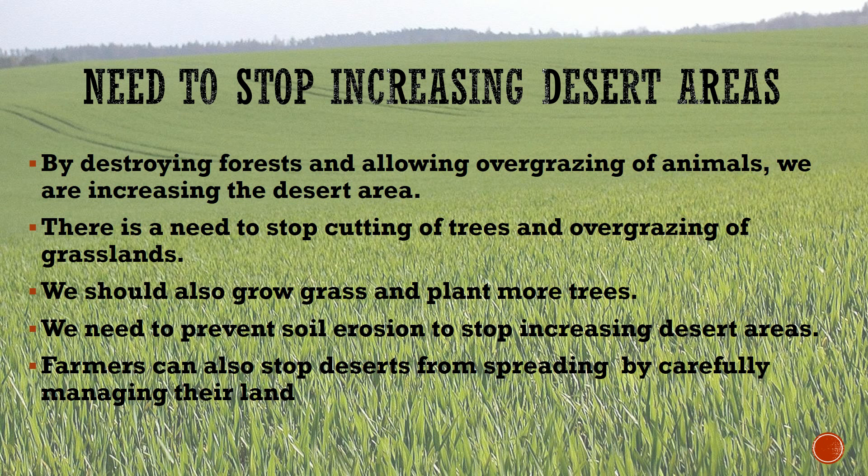We need to stop increasing desert areas. By destroying forests and allowing overgrazing of animals, we are increasing the desert area. There is a need to stop cutting of trees and overgrazing of grasslands. We should also grow grass and plant more trees. We need to prevent soil erosion to stop increasing desert areas. Farmers can also stop deserts from spreading by carefully managing their land.